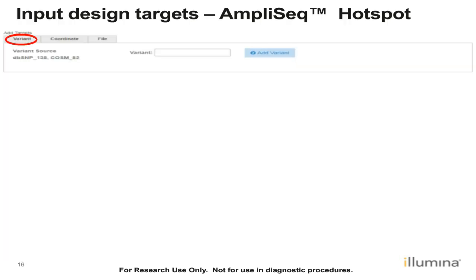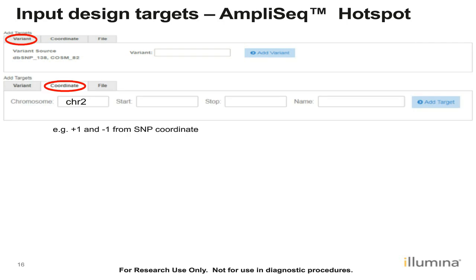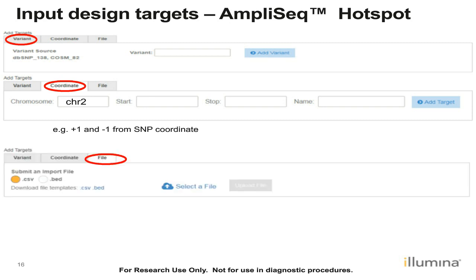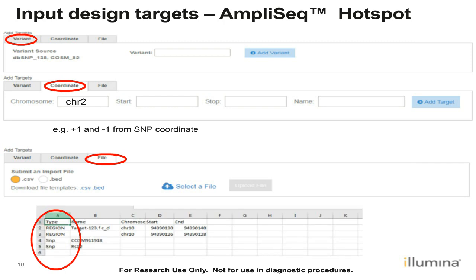For the AmpliSeq Hotspot panel, you can add variants. The nomenclature supports dbSNP IDs that can be added directly. You can also add coordinates — like for the AmpliSeq Gene design, you provide the chromosome name, start, and stop position, which would be plus and minus one from the SNP coordinates. Finally, you can add directly by file, either as CSV or BED format. The file format includes chromosome number with start and ending point, and you can also add SNPs or variants directly with several nomenclature examples supported.